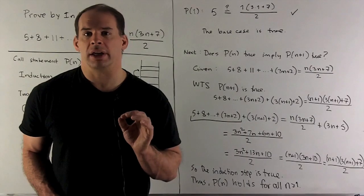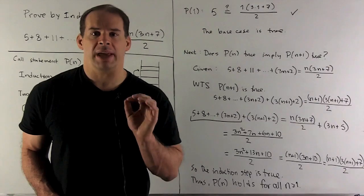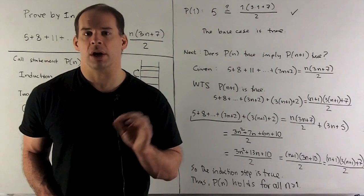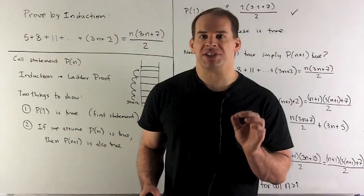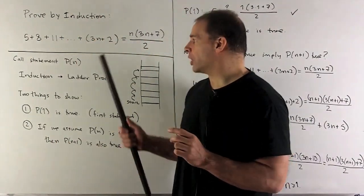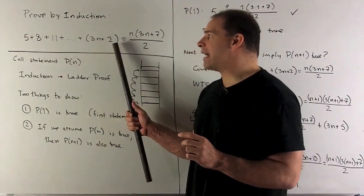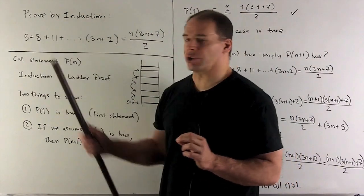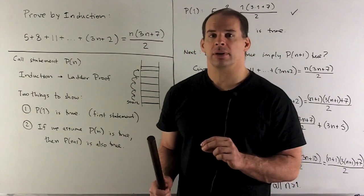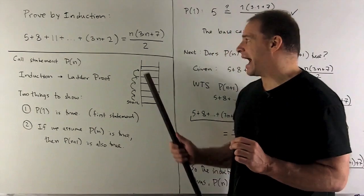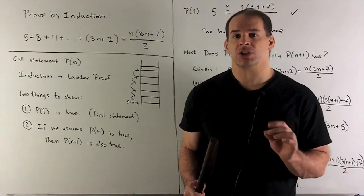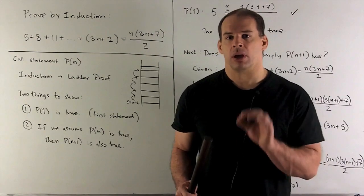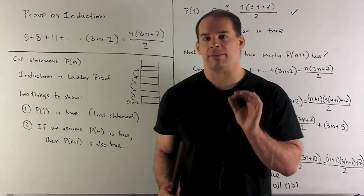For the statement we're working on, we begin by proving the base case. So I want to show P(1) is true. To do that, I just take our statement. Wherever I see an n, I put a one. So on the left side, we're going to get a five, so we're only using the first entry. So on the left, I have five. On the right, we'll have one times ten divided by two. That also gives me a five, so we get five equals five, P(1) is true, and I have my base case.